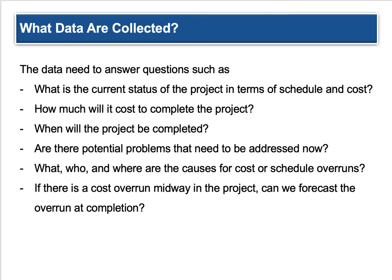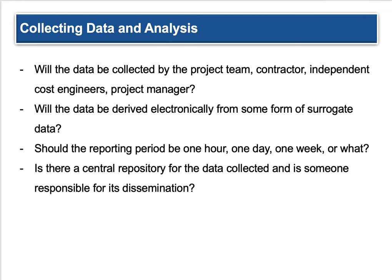When collecting data, ask yourself: are there potential problems that need to be addressed? We went through this in our risk assessment. Then we need to look at who and where are the causes for cost or schedule overruns, and how do we address them. If there's a cost overrun midway, can we forecast the overrun at completion? Is it a one-time cost or ongoing? Our supervisors will monitor this if we do not — they'll ask why we're over budget or behind schedule, so we need the pertinent information at our fingertips.